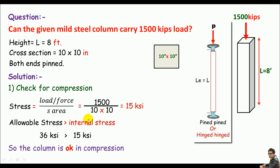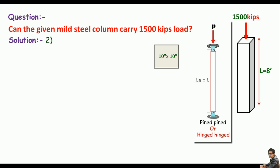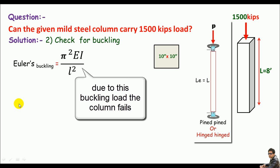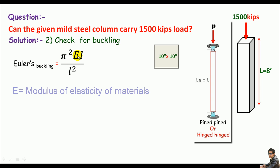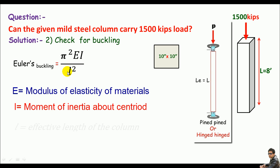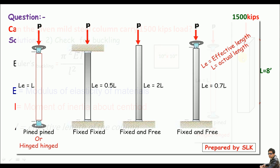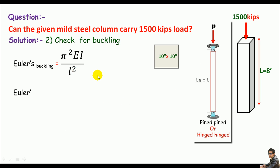Now I'll check the column for buckling. To check the column for buckling, I need to calculate the buckling load. I can use Euler's buckling load formula as π² EI divided by L². Here π is a known value, E is the modulus of elasticity of the material, I is the moment of inertia, and L represents the effective length which depends upon the end condition of the column.